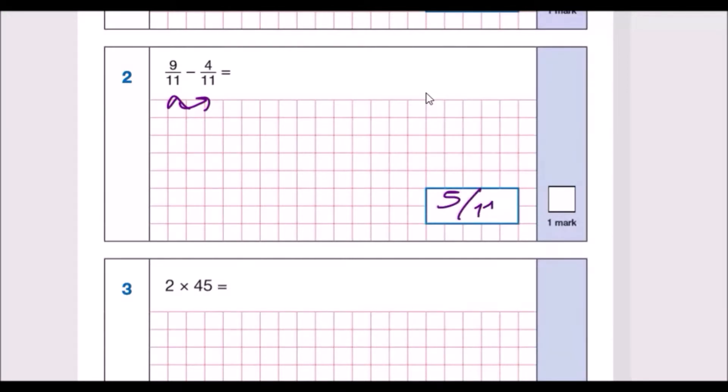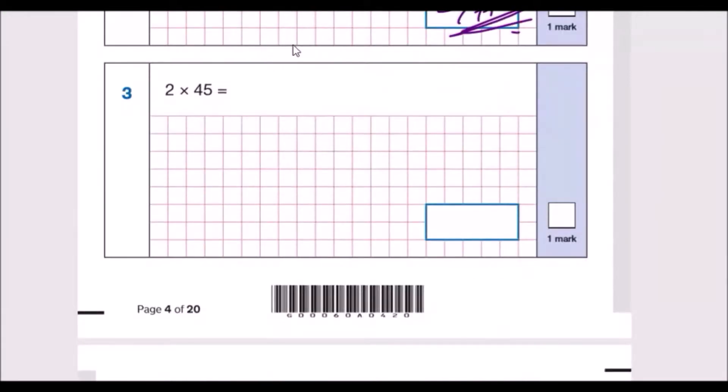Question 3: double 45, 2 times 45. If you already know the answer it should be 90. If you did not know that I would partition this, I would do 2 times 40 first and then 2 times 5. The easy way to do this is 2 times 4 is 8 and then stick a 0 is 80, 2 times 5 is 10, and then add them up you get 90. Easy.